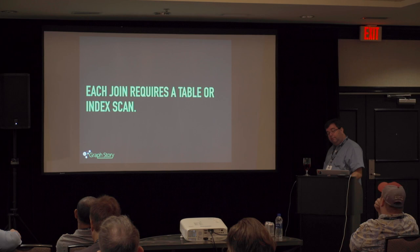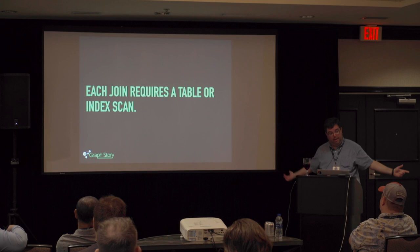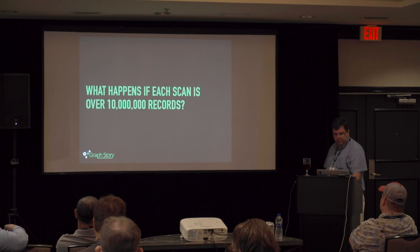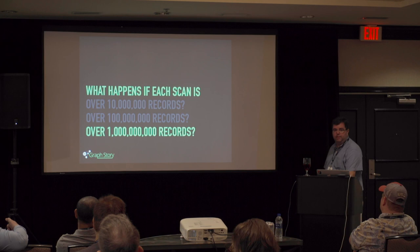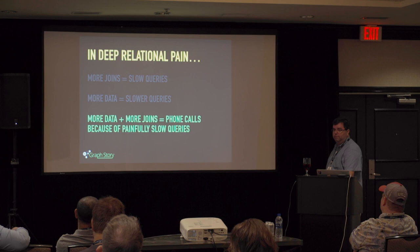Which do you want — 10 lines or two lines? You want the two lines. Each join requires a table or index scan. Has anybody had to update an index inside a relational system after having, say, 10 million records in it? Not fun. What if the scan is over 100 million or a billion records? Easily get into that with some company's data. You're in deep relational pain — more joins, slow queries, more data, slower queries. More data plus more joins equals phone calls because of painfully slow queries.